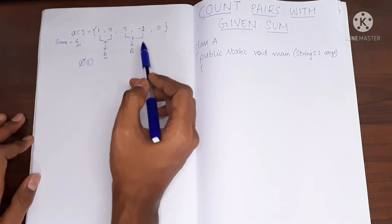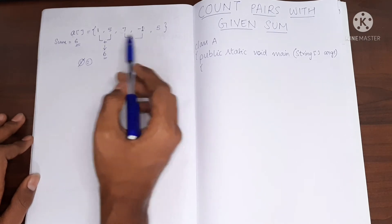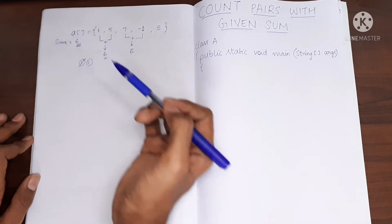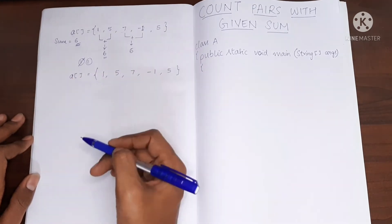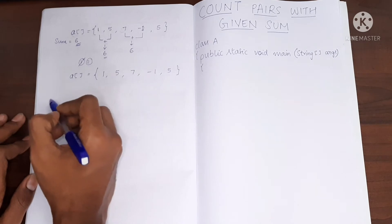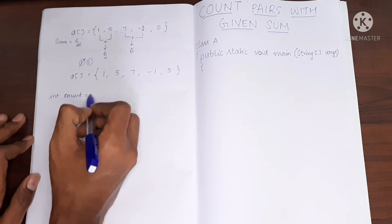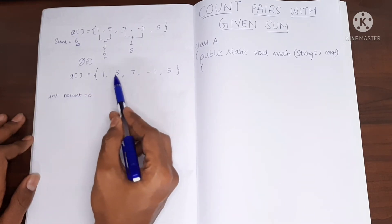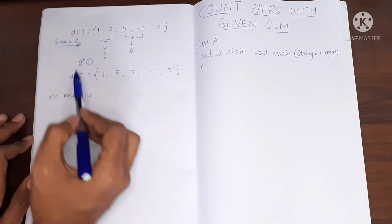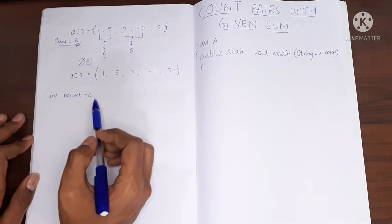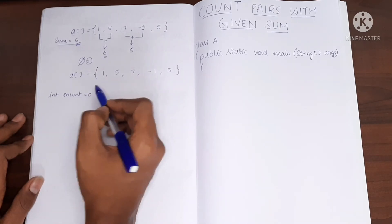So in this way we have to find how many pairs of numbers exist in this array which will give us the sum as six. Now let's discuss the logic. For this, first I will need a variable called count. It will be initially zero. Whenever I find a pair of numbers which will give me the sum as six, I'm going to increment this counter.